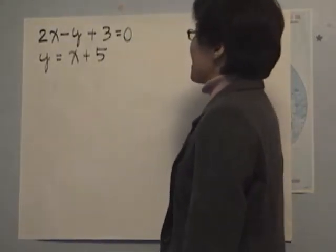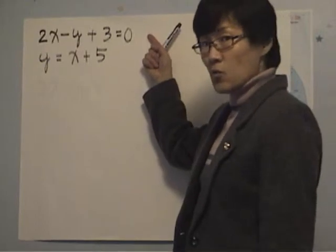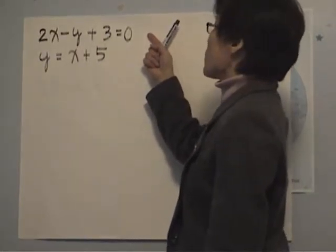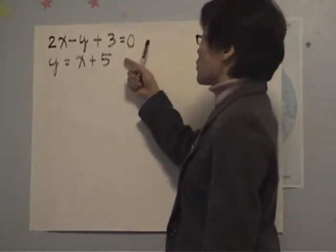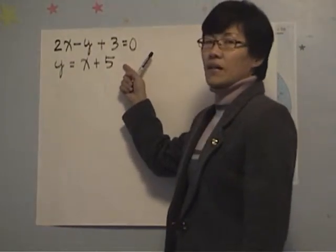Our system is, first equation, 2x minus y plus 3 equals 0, second equation, y equals x plus 5.